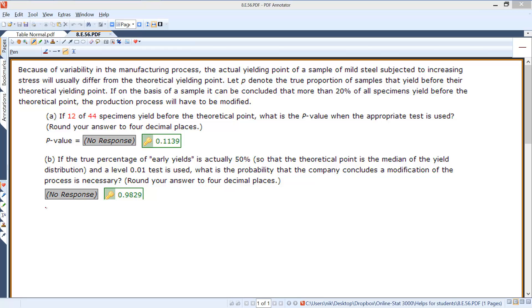Because of the vulnerability in the manufacturing process, the actual yielding point of a sample of mild steel subjected to increasing stress will usually differ from the theoretical yielding point. Let p denote the true proportion of samples that yield before the theoretical yielding point.